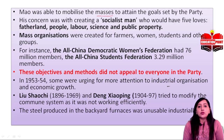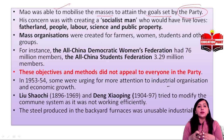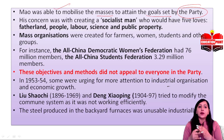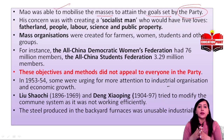Mao was able to mobilize the masses to attain the goals set by the party. The main concern was creating a socialist man, which had five features: the fatherland, the people, the country, labor, science, and public property. Mass organizations were also created by farmers, women, students, and other groups, which were organized collectively.